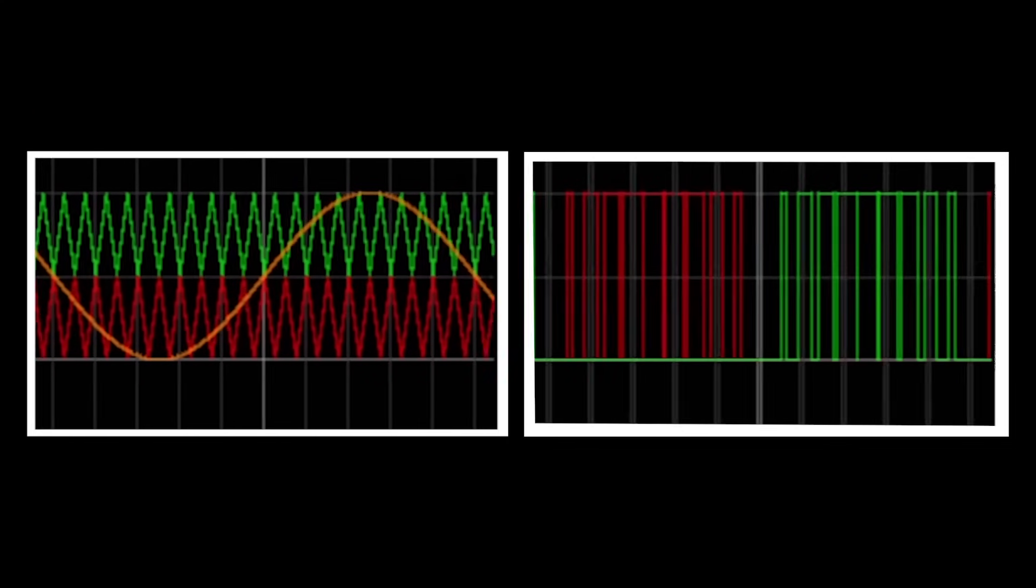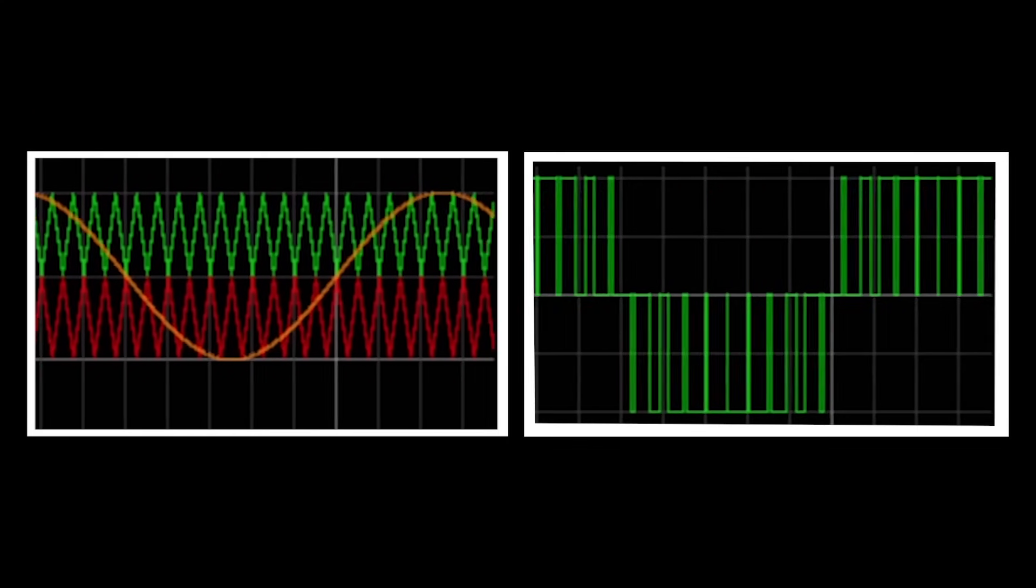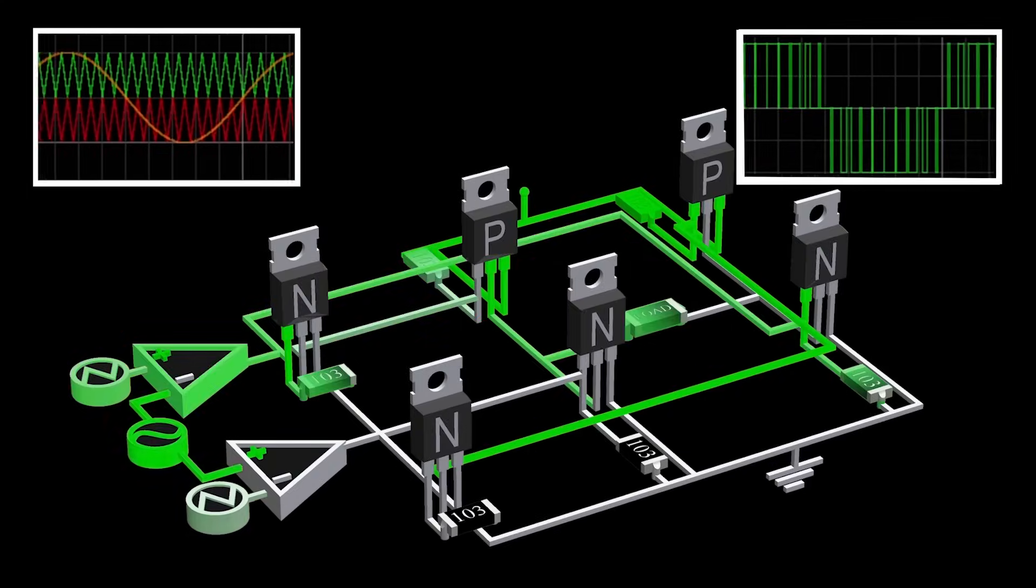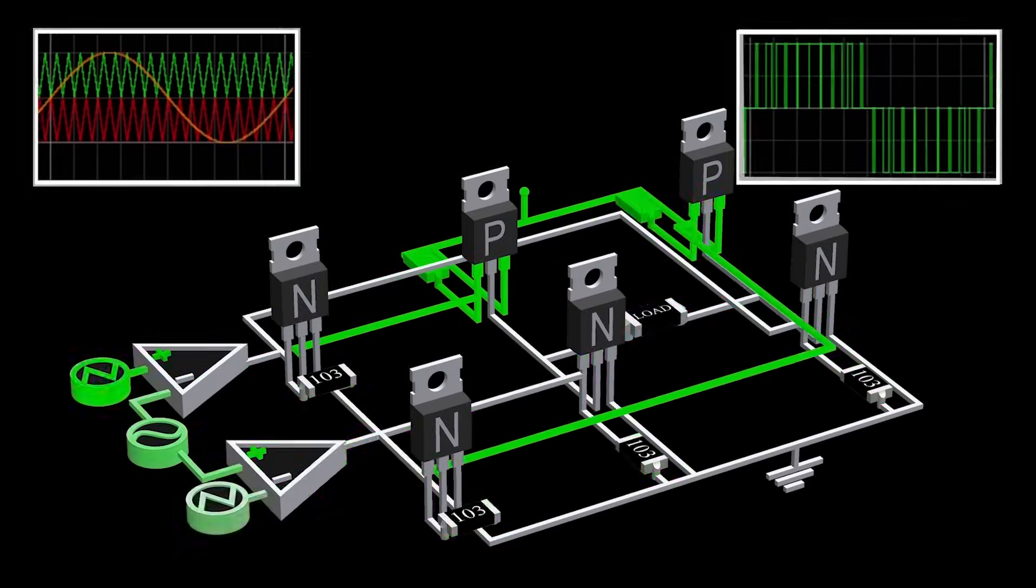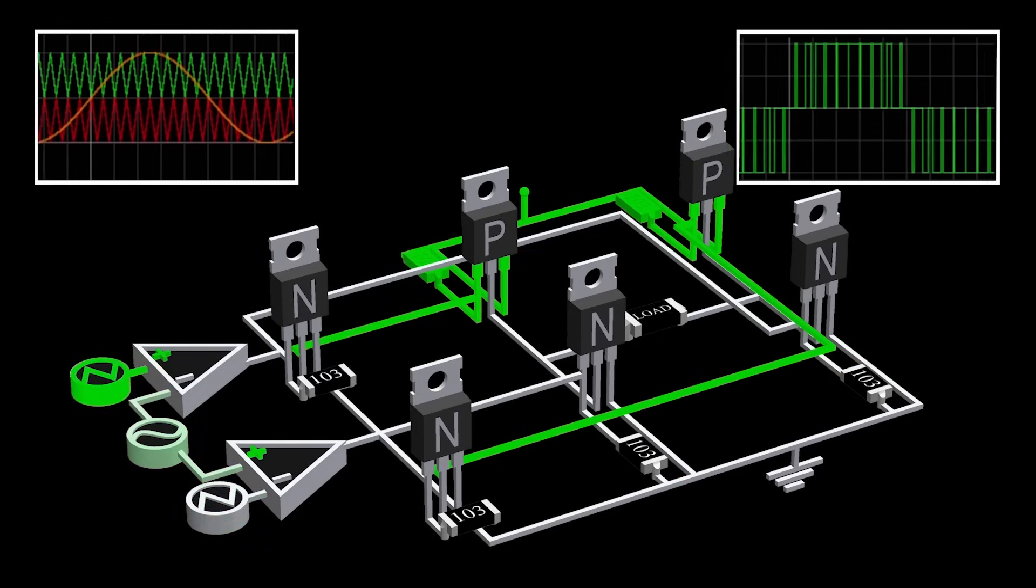Now the PWM signal looks like this. Let's rearrange it. The voltage is not negative, but the direction is opposite, hence it looks negative.